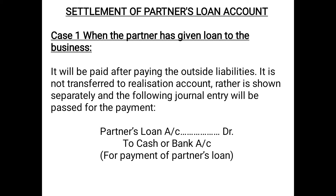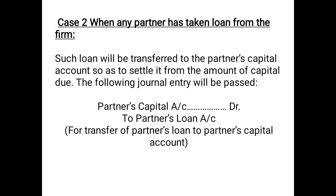The journal entry for paying the partner's loan in Case 1 is: Partner's Loan Account Dr to Cash or Bank Account. The loan account carries a credit balance since it is a liability; when we settle it, we debit it to reverse it. Cash or bank is credited because cash is going out of the business.